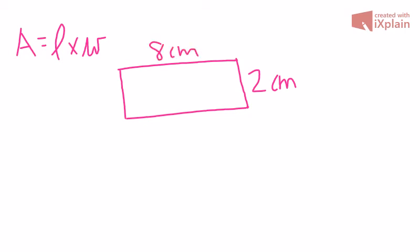I know that length is up and down on a 2D shape and width is side to side on a 2D shape. So my length is 2 and width is 8. So 2 times 8.